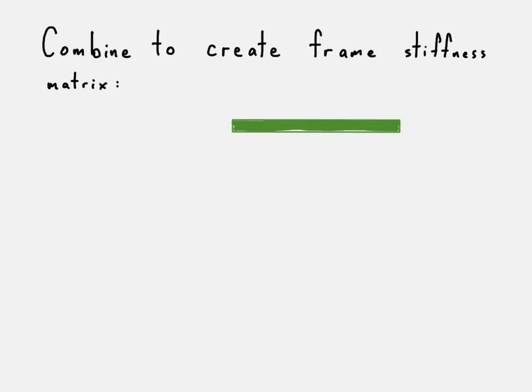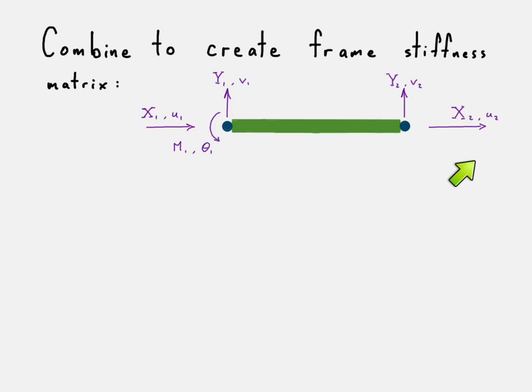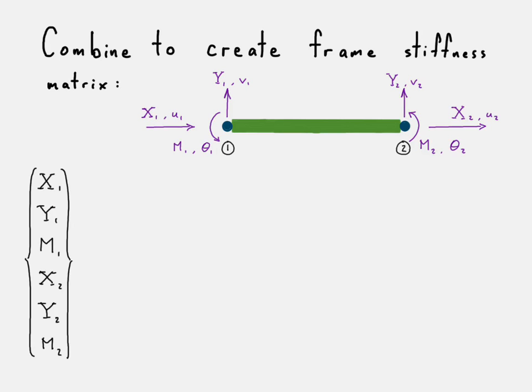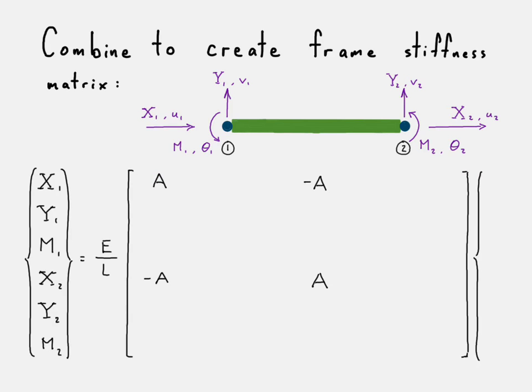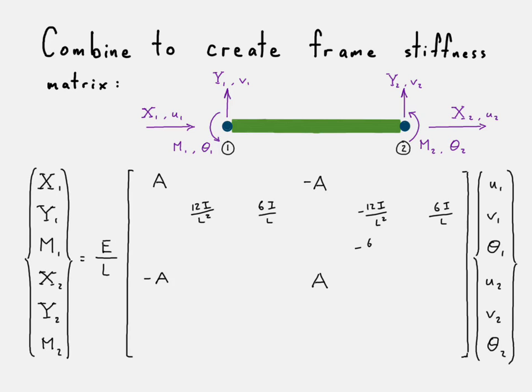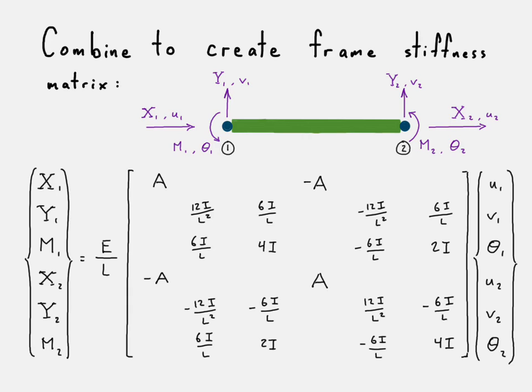All we do is just combine to create the frame stiffness matrix. Here is our frame element — two nodes. We have the axial loads, just like you would have for a truss element, but we also have the transverse loading and the bending that you would have in a beam element. We just combine this all into a six by six stiffness matrix. We write in the truss element portions of the stiffness matrix, then write in all the beam portions — the transverse and rotational stiffness. Those are coupled, which is why we have the four there, and just one for the axial direction.